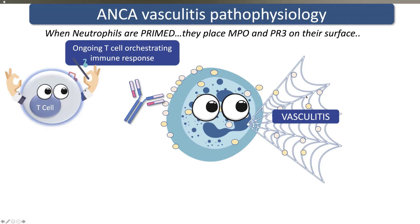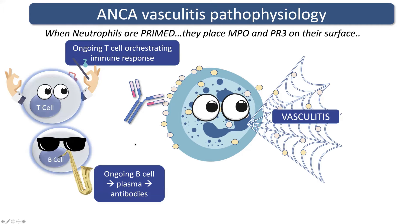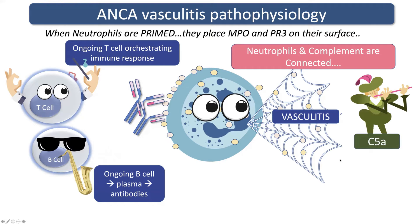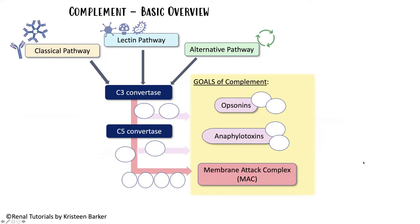And in the background, we've also got this ongoing T cell response sort of orchestrating this whole thing. We've still got B cells turning into plasma cells and making more antibodies. And in addition to that, we've got complement. Neutrophils and complement are actually connected, and the main way we need to know about for ANCA vasculitis is via C5A. So let me show you that on this diagram.